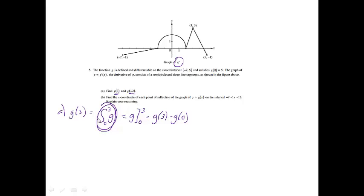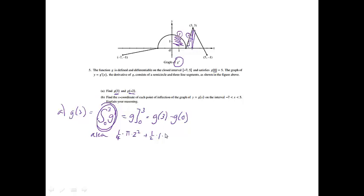I'm going to find this value first. If I want the integral of g prime and I'm given a picture, that's just the area under the curve. If I look at the area under the curve from 0 to 3, I notice that I have a quarter circle and a triangle. That area is going to equal one fourth times pi times the radius, which is 2 squared, plus one half times the base of the triangle, which is 1, and the height of the triangle is 3.